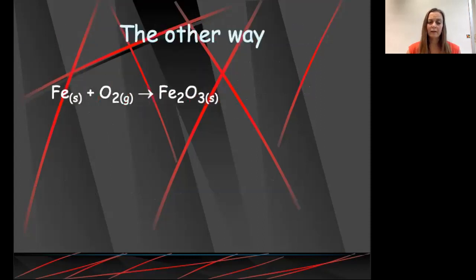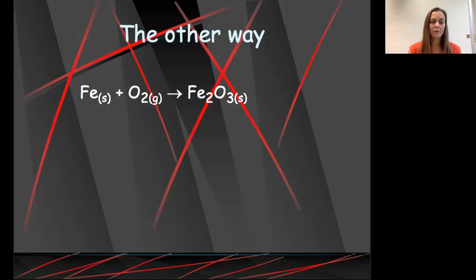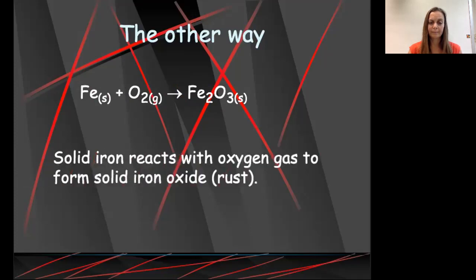Now can we go the other way? Can we take a formula equation and say it in words? So here we're going to take our cue from this little (s), and we're going to say solid iron reacts with oxygen gas to form solid iron(III) oxide. And we know that it's iron(III) oxide because there are three oxygens to go with our two iron ions.